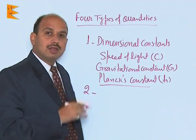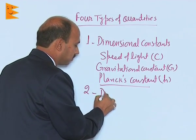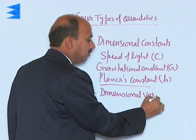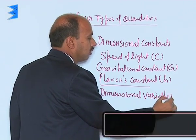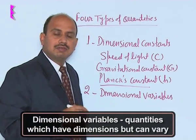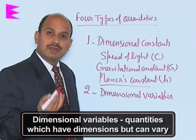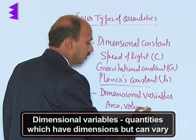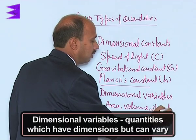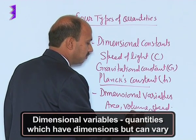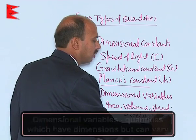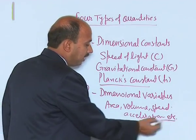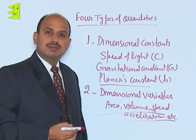Another type of quantity is dimensional variables. Those quantities which have dimensions but can vary — for example, area, volume, speed, acceleration, etcetera. All these quantities can vary, so these are known as dimensional variables.